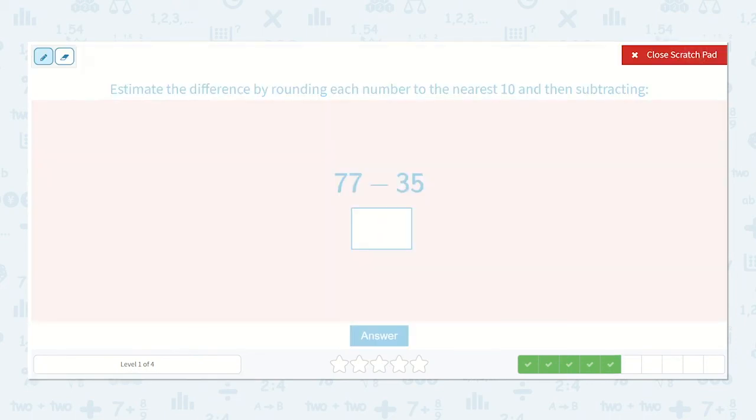77 minus 35, so 77 would round up to 80, and 35 would round up to 40. So 80 minus 40. I know 8 minus 4 is 4, so 80 minus 40 is 40.